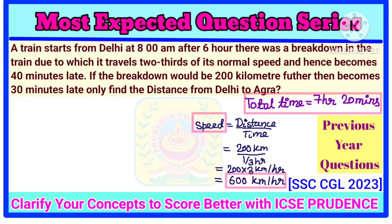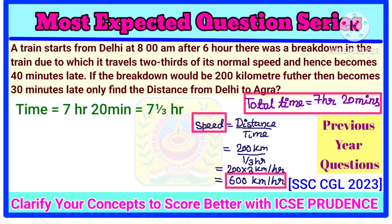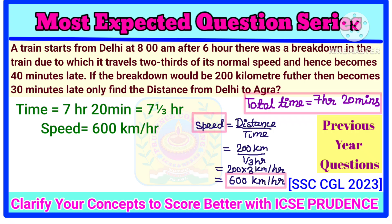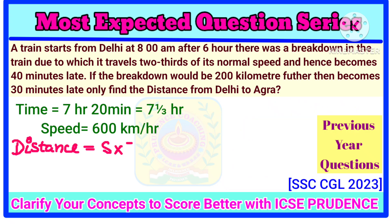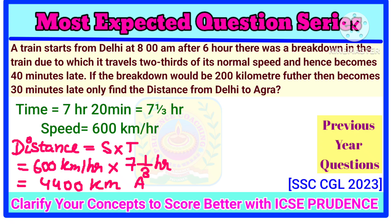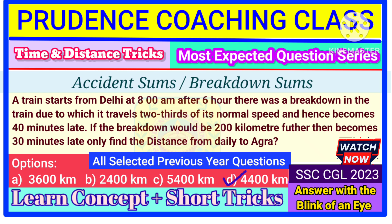So we now have the total journey time — 7 hours 20 minutes — and the original speed — 600 km per hour. Multiplying both gives us the distance from Delhi to Agra. 7 hours 20 minutes multiplied by 600 km per hour gives 4,400 km. That is our final answer.